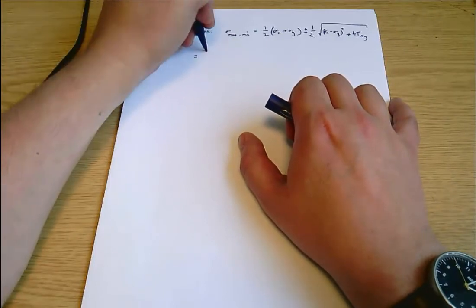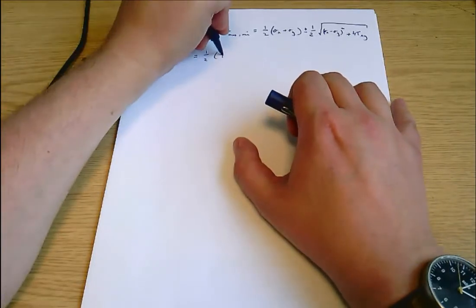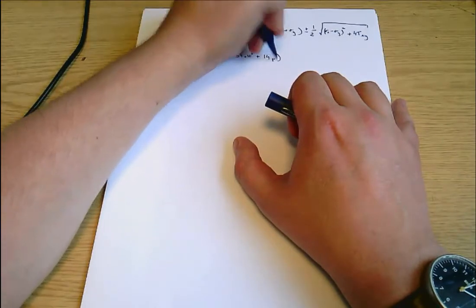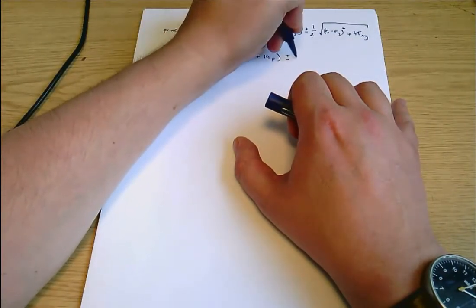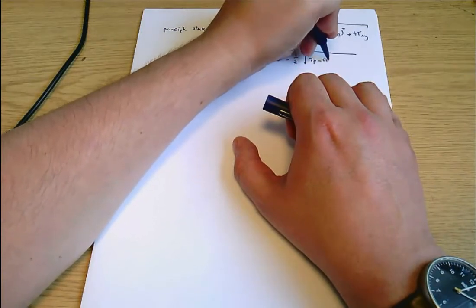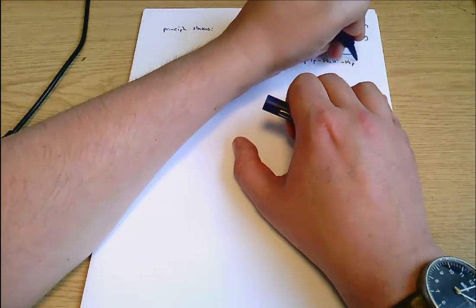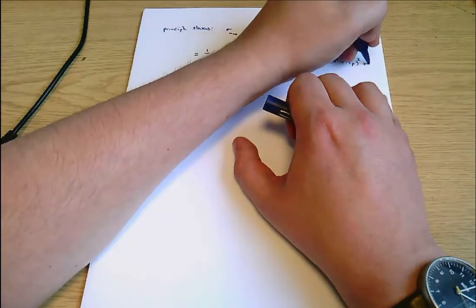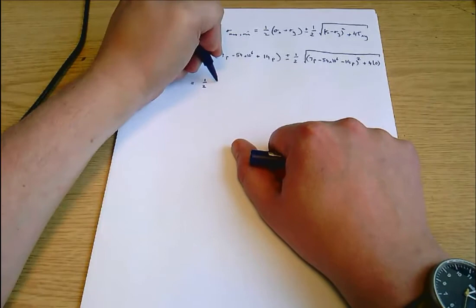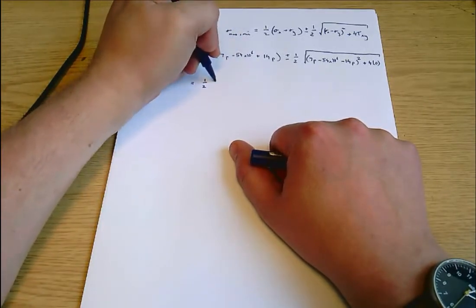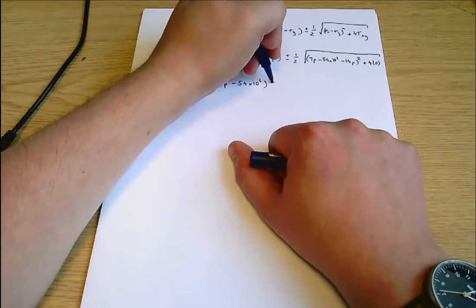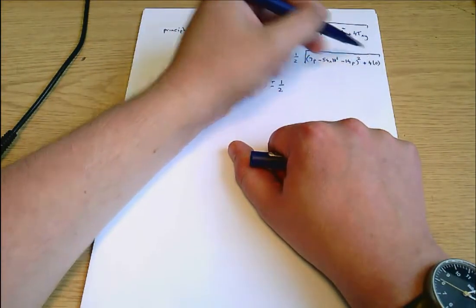Which in this context equals one-half sigma X is 7P minus 54 times 10 to the 6 plus sigma Y is 14P plus or minus one-half square root... plus 4 times 0. This value here is 0.